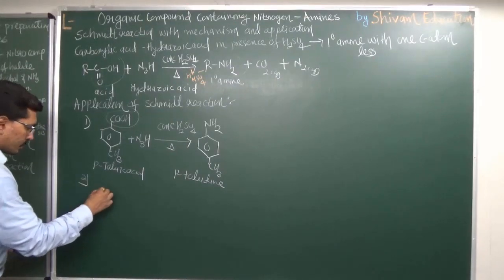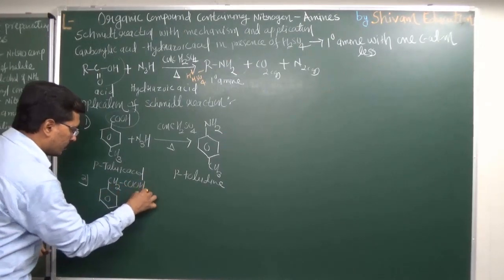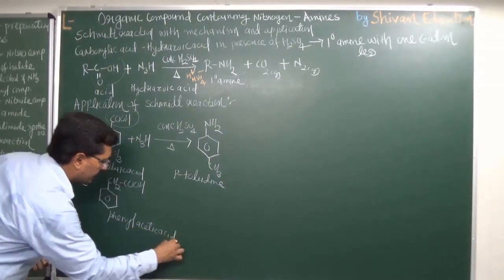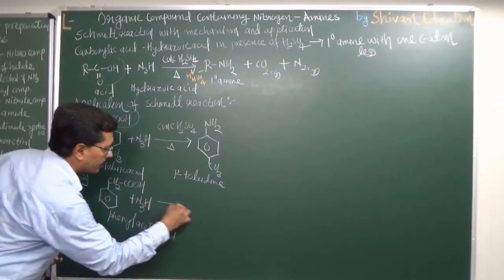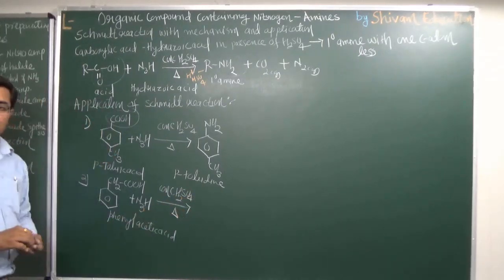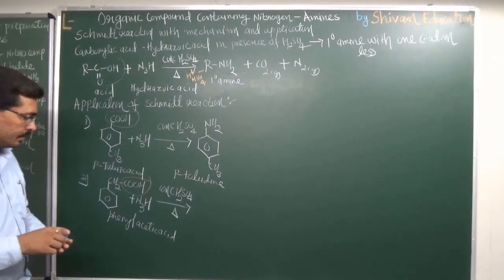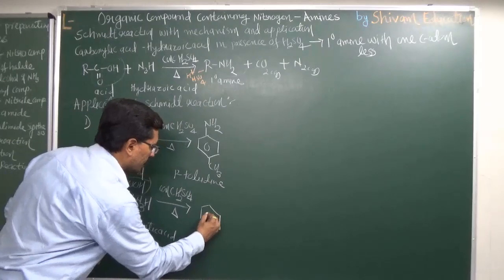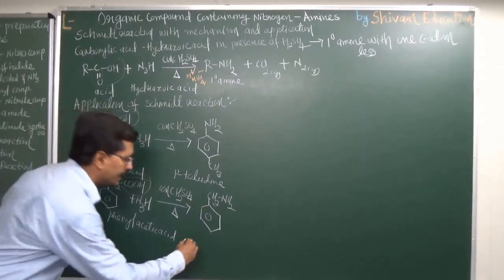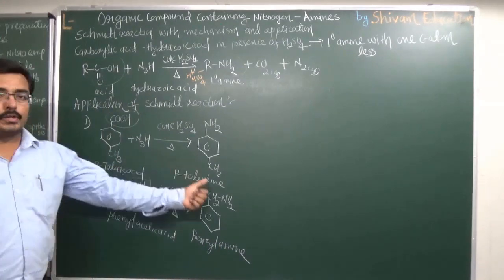For the second application, suppose we have phenylacetic acid. Under the same conditions — N₃H and concentrated sulfuric acid — the carboxyl group converts into -NH₂ via isocyanate. The product of this reaction is C₆H₅-CH₂-NH₂, which is known as benzylamine.